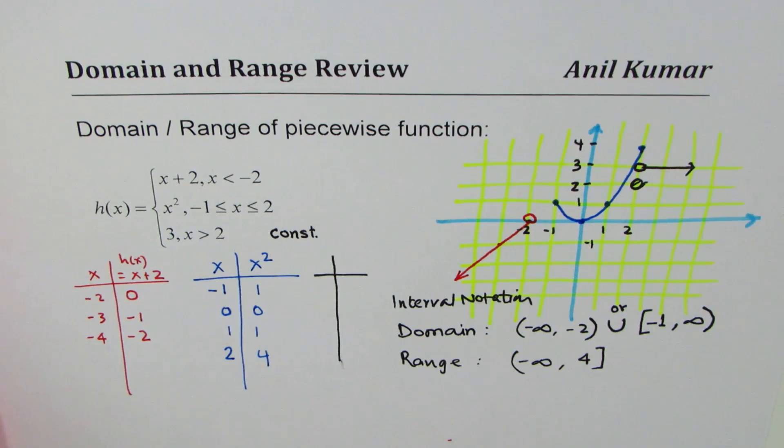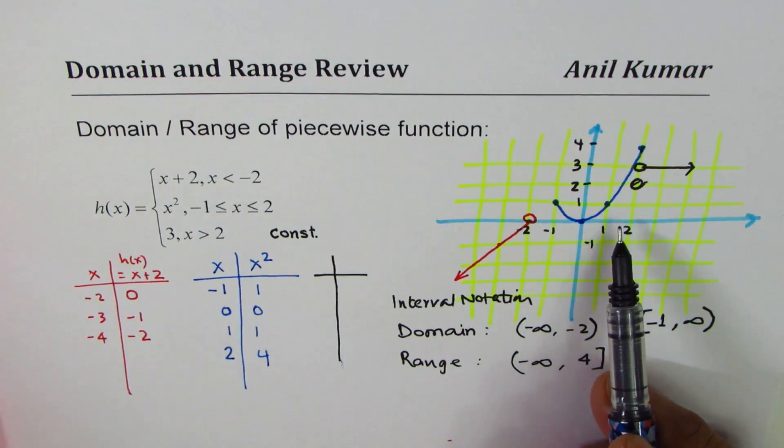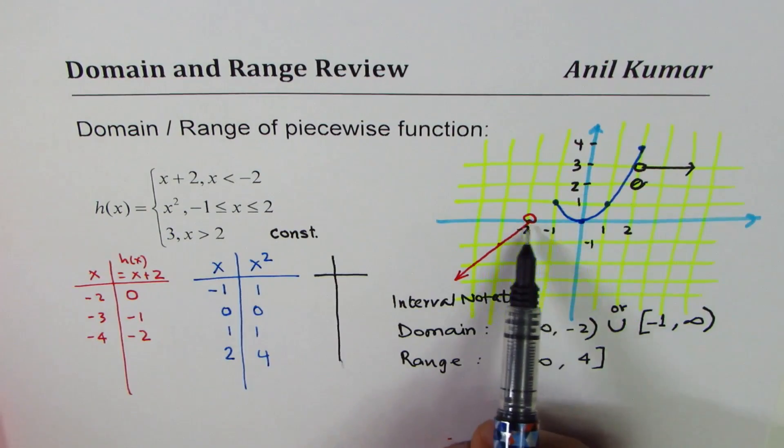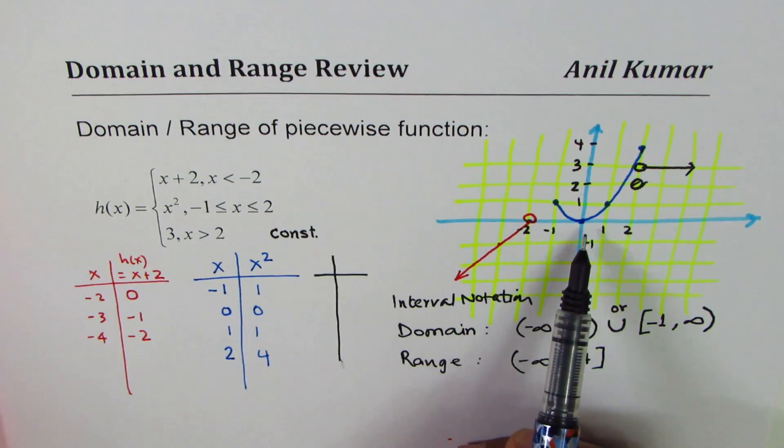Now, there could be some related questions, whether the function is continuous or not. We see there is a discontinuity between minus 2 and minus 1 in this particular function.